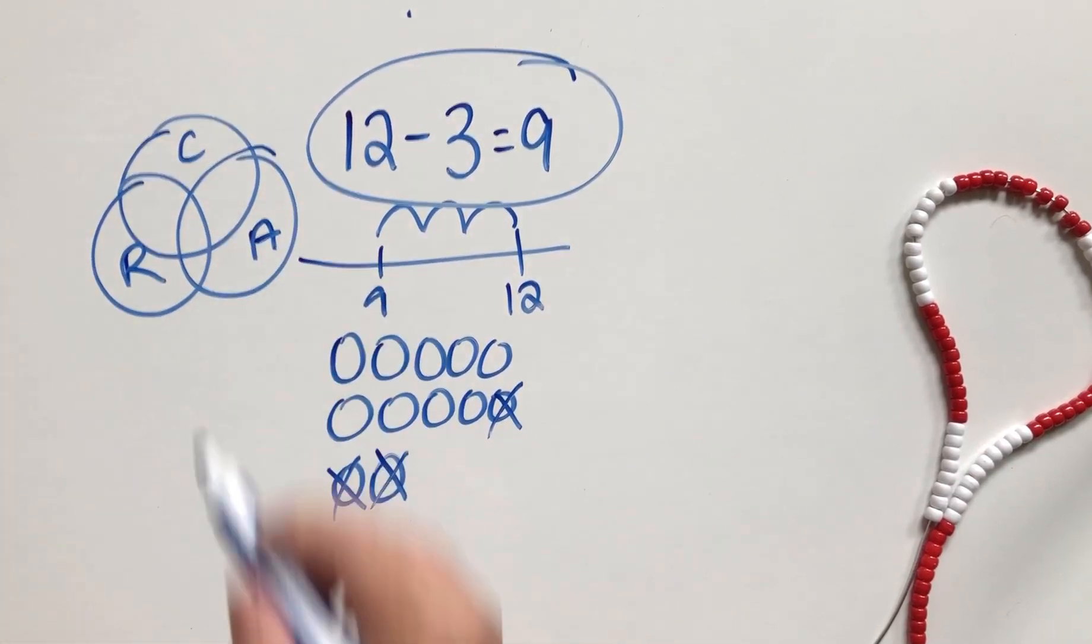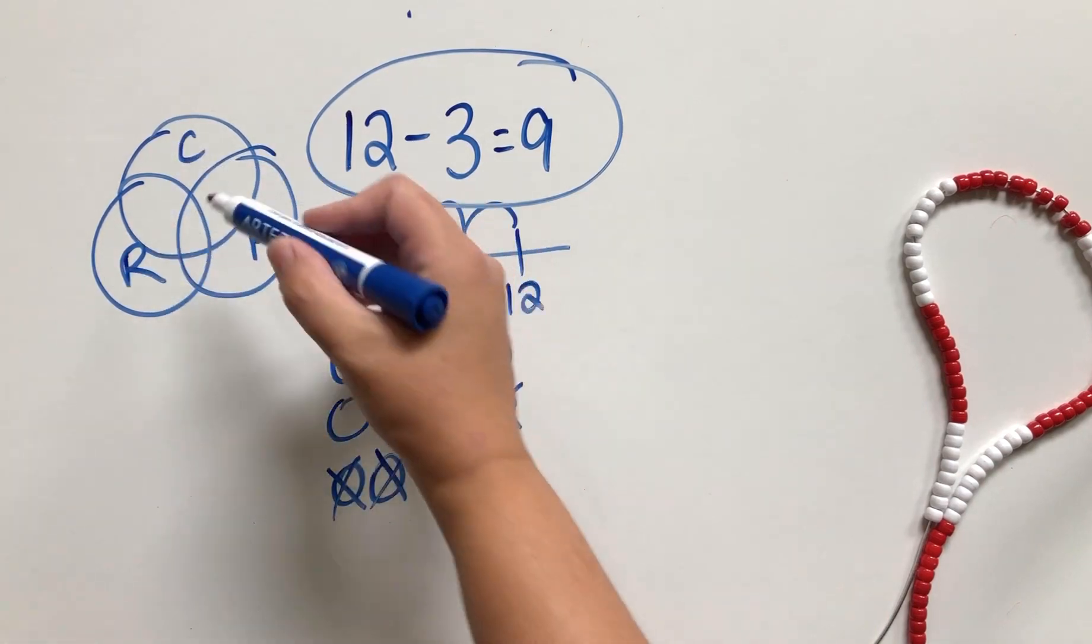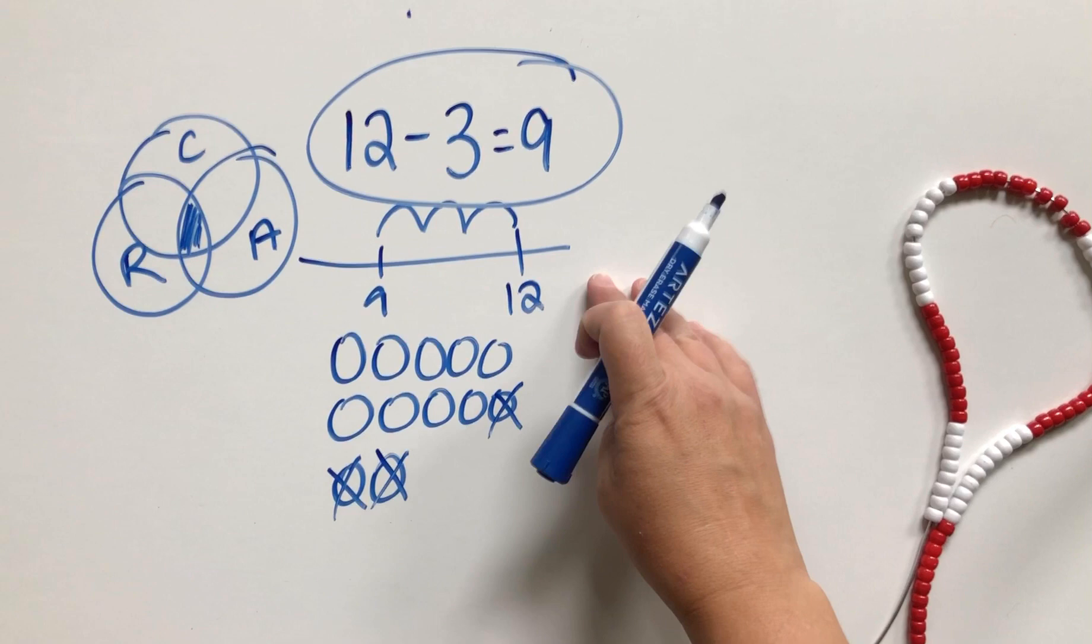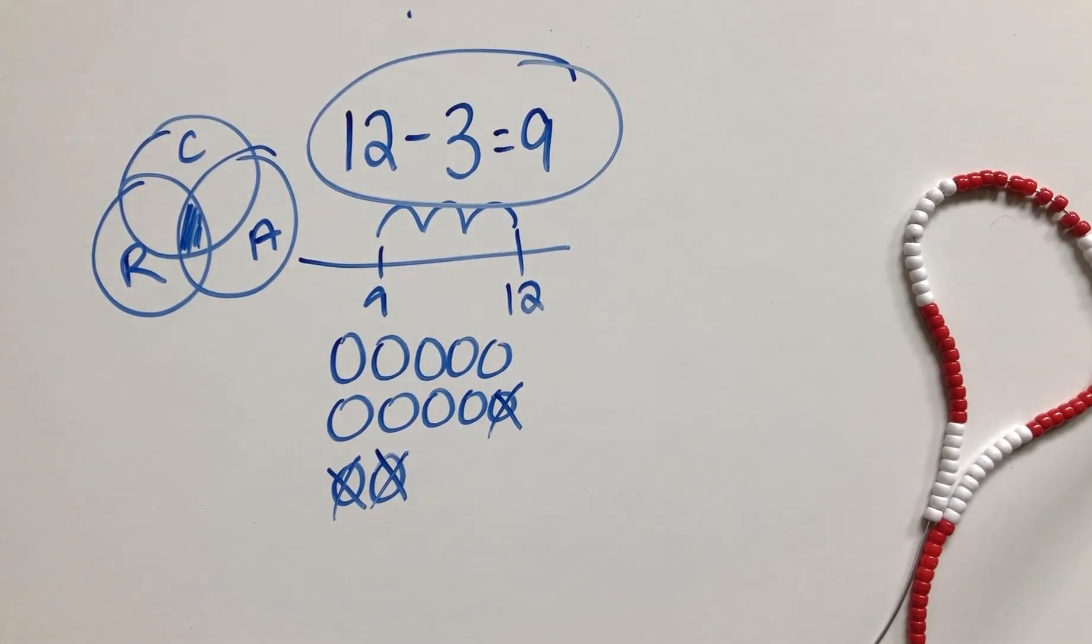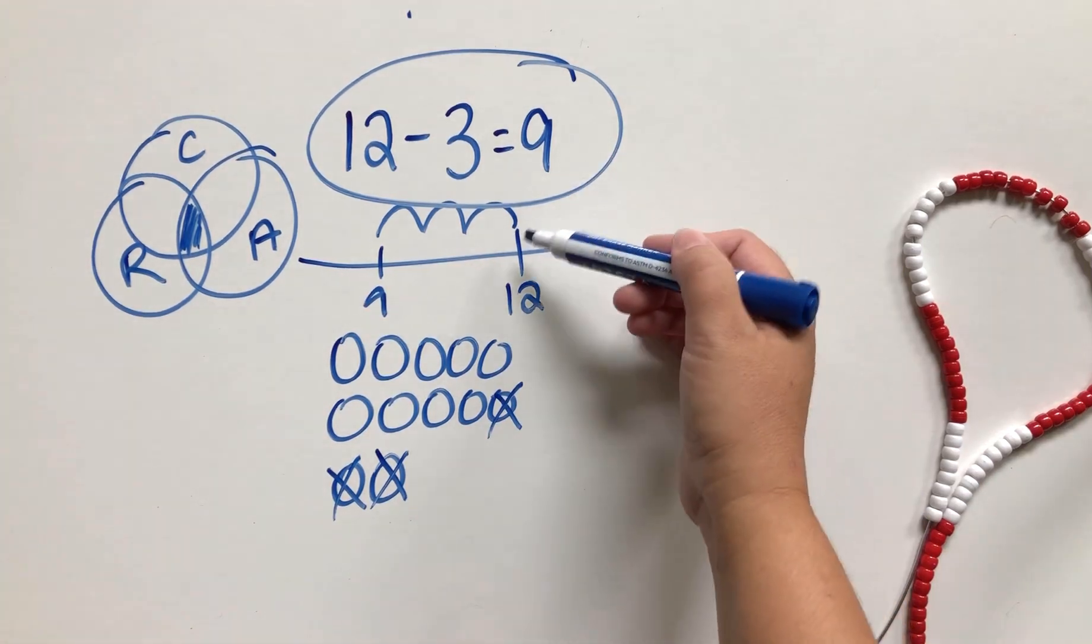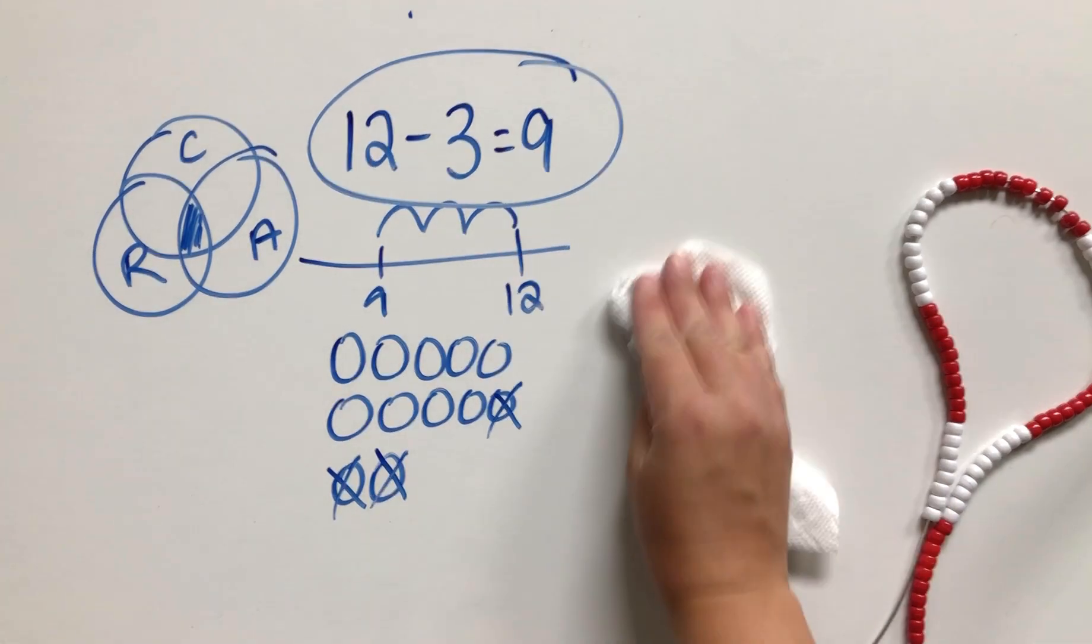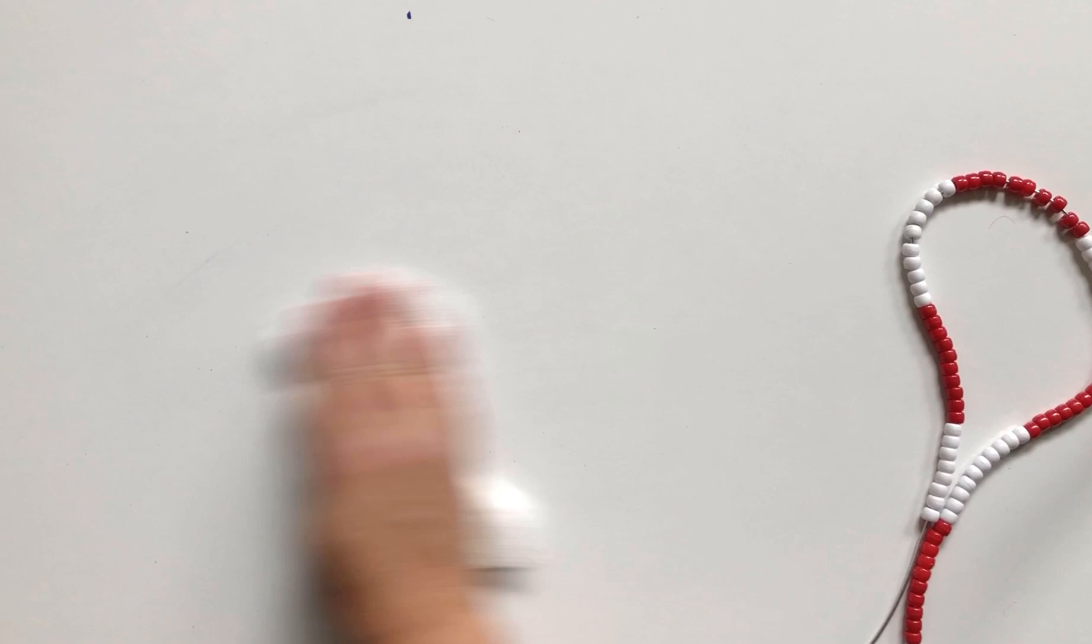And rather than starting concrete and then moving to representational and then moving to abstract, what if we did all three all together as much as we can? So when we're doing number talks or math lessons or small guided math groups, we're showing the math in all different ways so that we can really maximize the way that students are building their understanding.